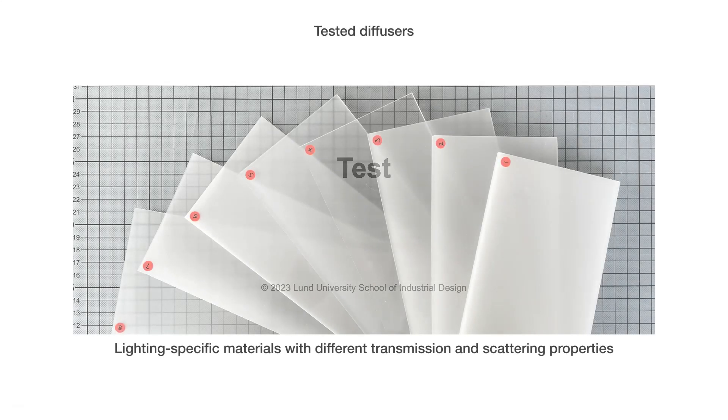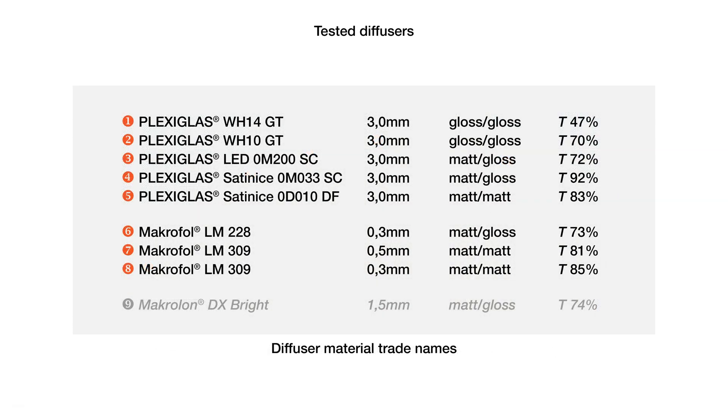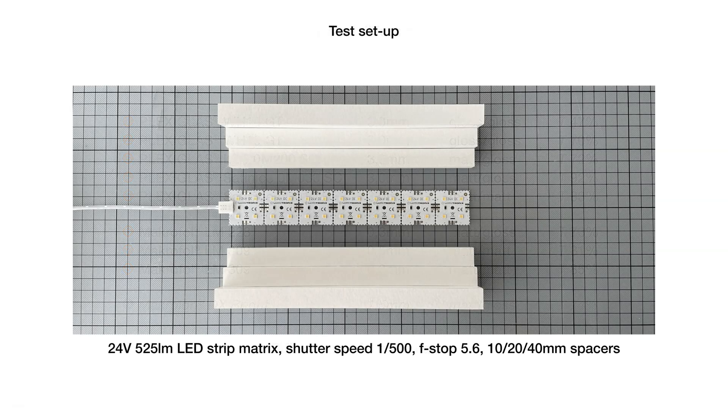Now that we've looked at a bit of theory, let's see some diffuser material tests. So, we have eight material samples cut to the same dimensions, with different thicknesses, surface treatments, and transmission values. For a reliable comparison, we took photos under the exact same condition at three different distances from an LED strip matrix.